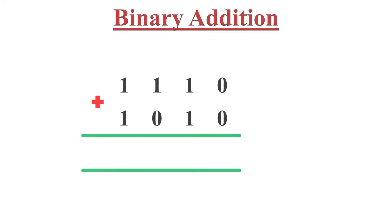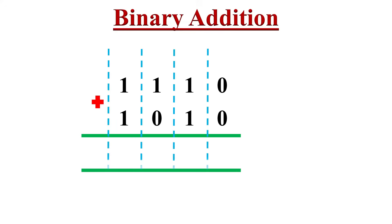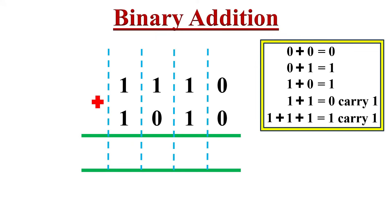Now let's solve some examples so that we will get a clear idea of binary addition. We must follow the column by column addition method, and we must start adding the rightmost column digits first, proceeding towards the left side. Here, the rightmost column digits are 0 plus 0, which equals 0.